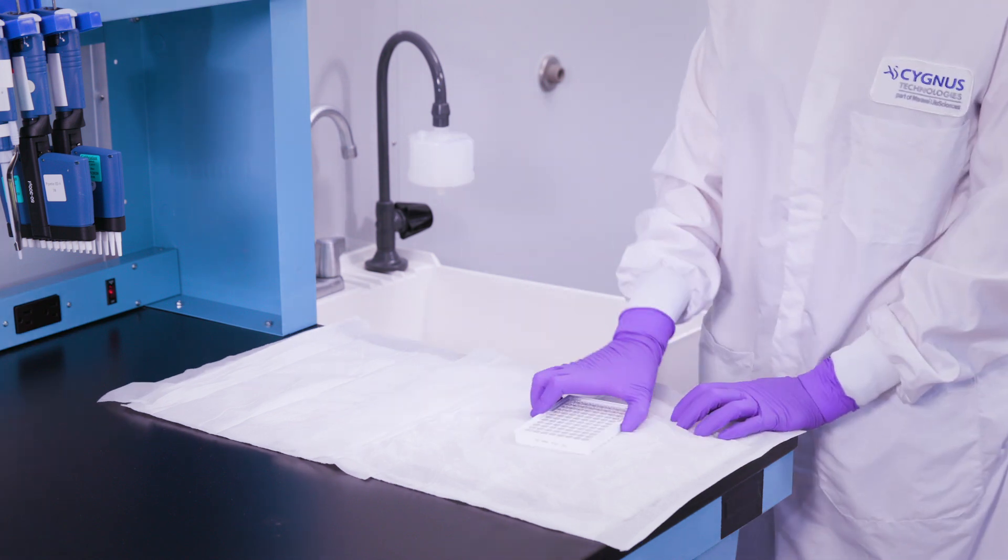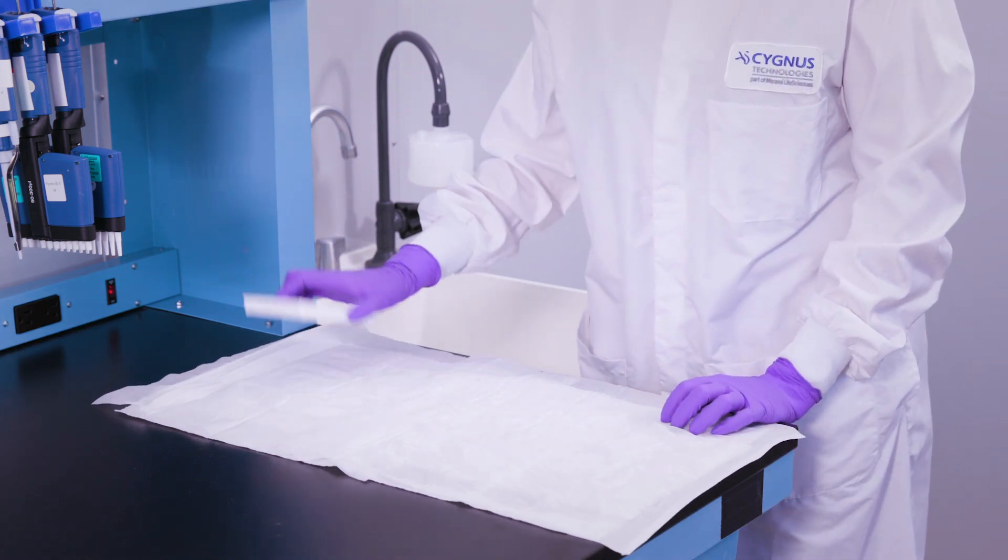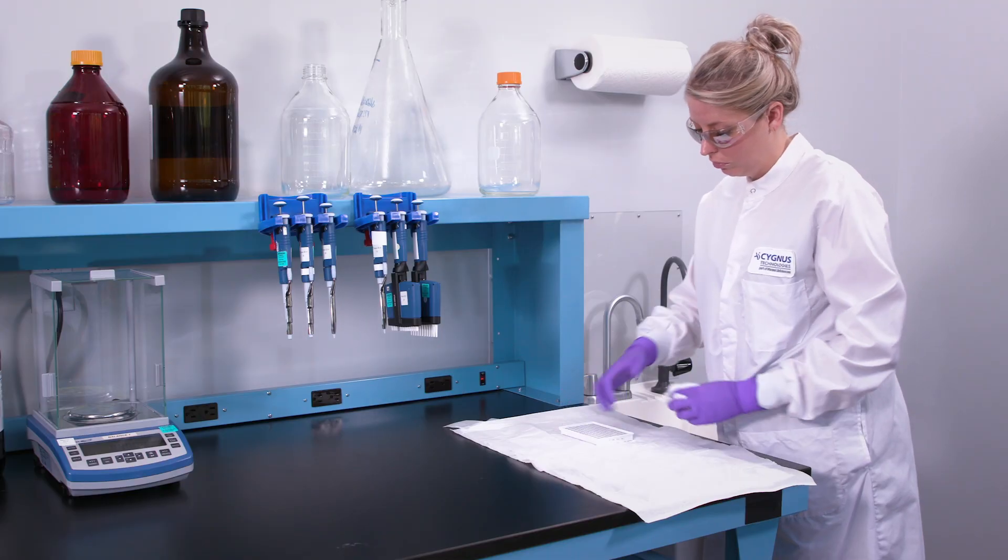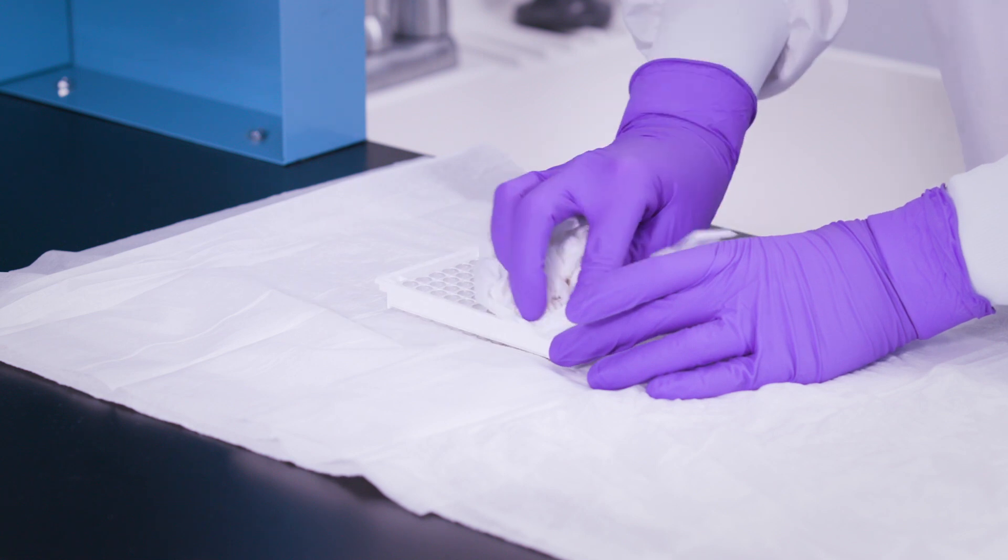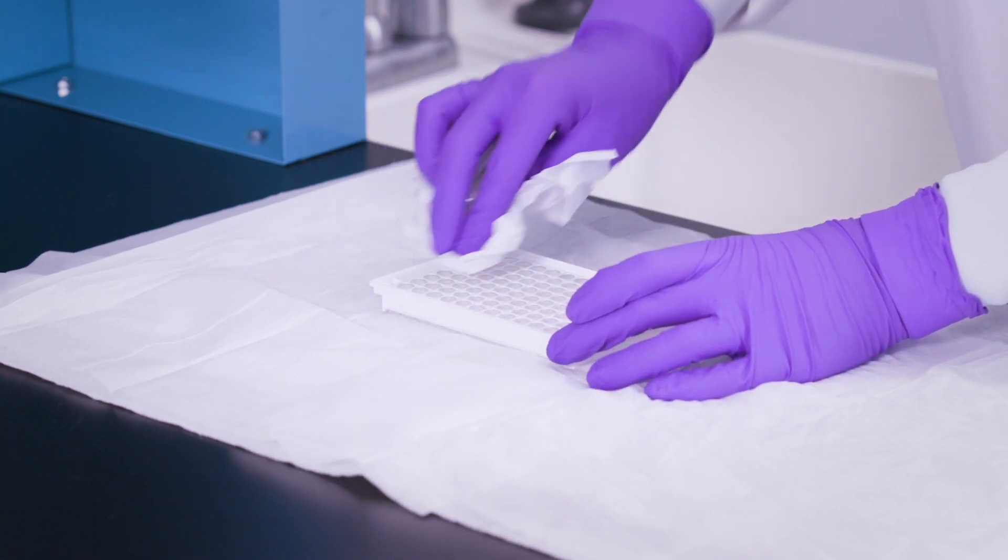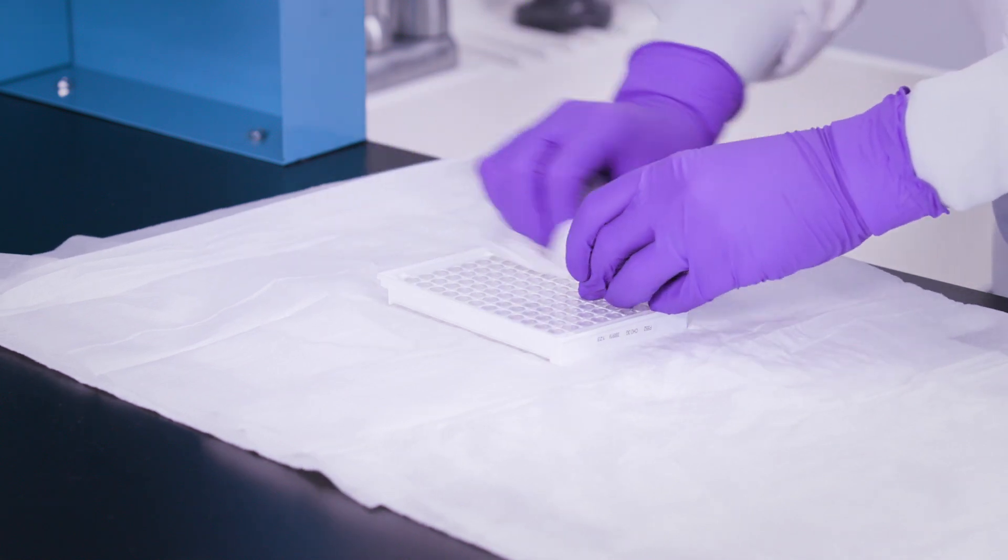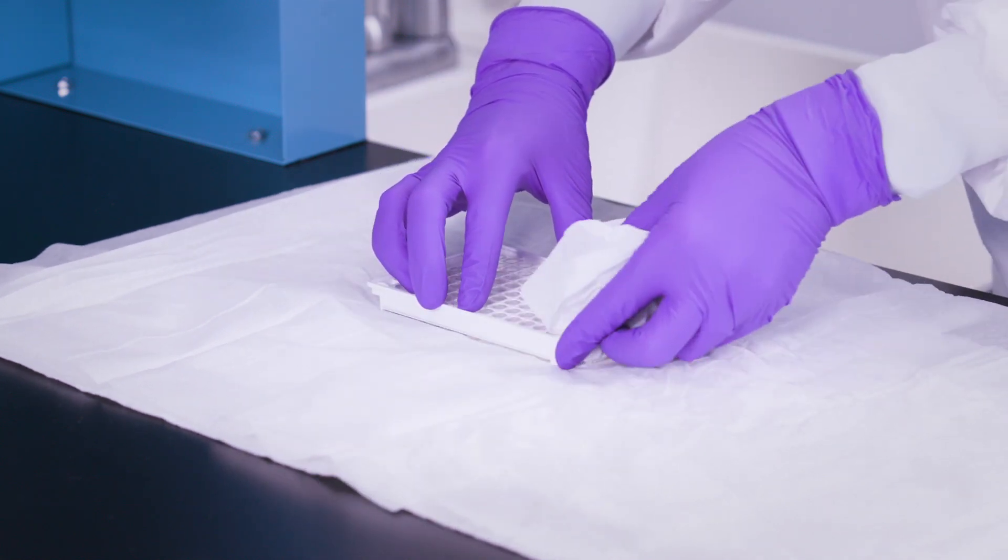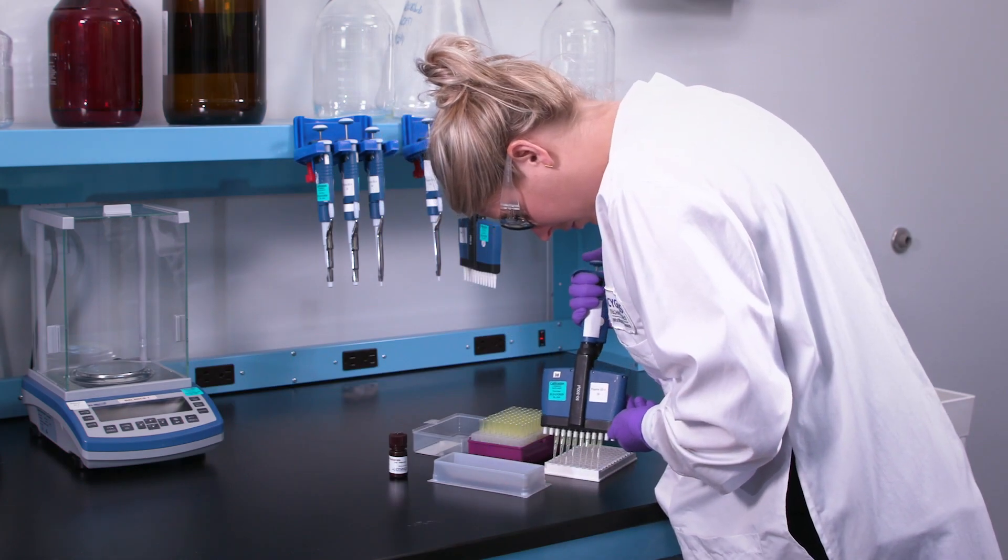After the final wash, blot and tap your plate eight to ten times on the unused sections of your blotting paper. When finished, wipe the bottom exterior of all wells with a clean absorbent paper. This will remove any remaining wash liquid caused by overfilling and tapping the plate. Once this is completed, the wells are now ready for substrate to be added to them.